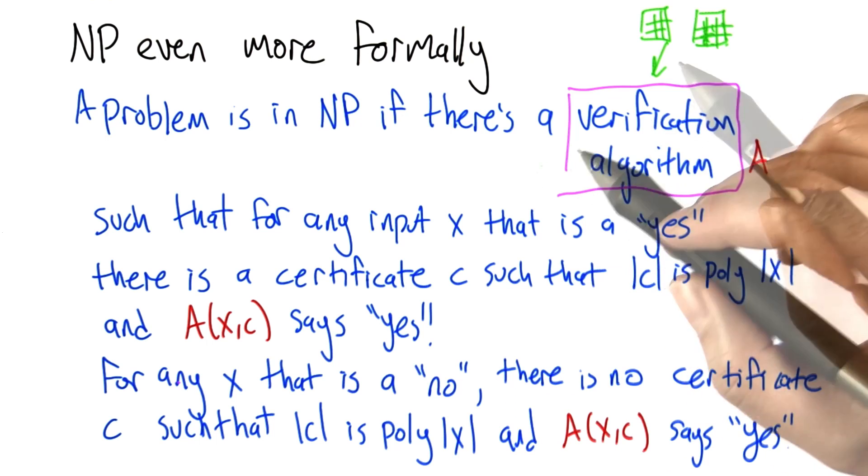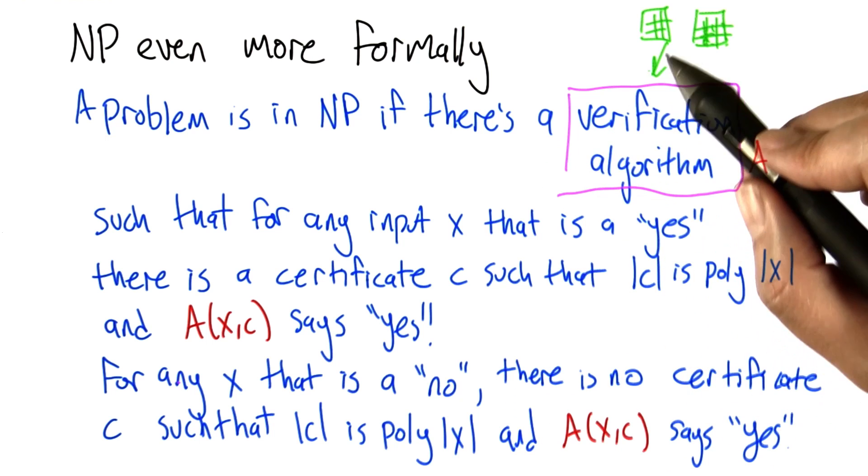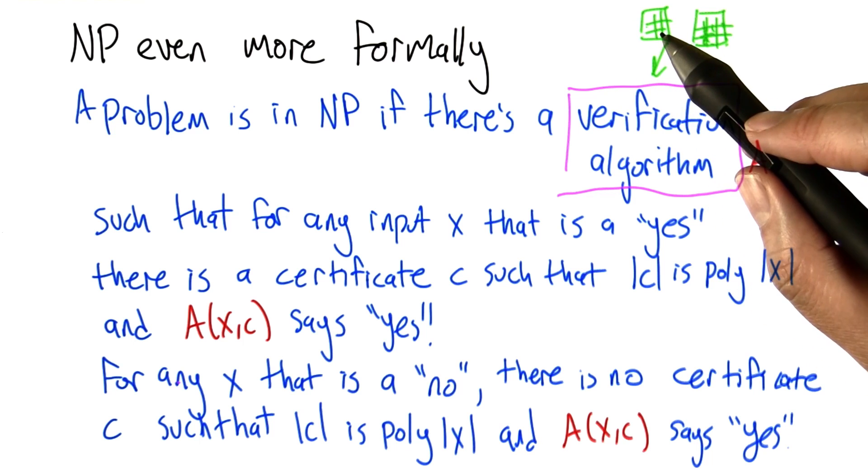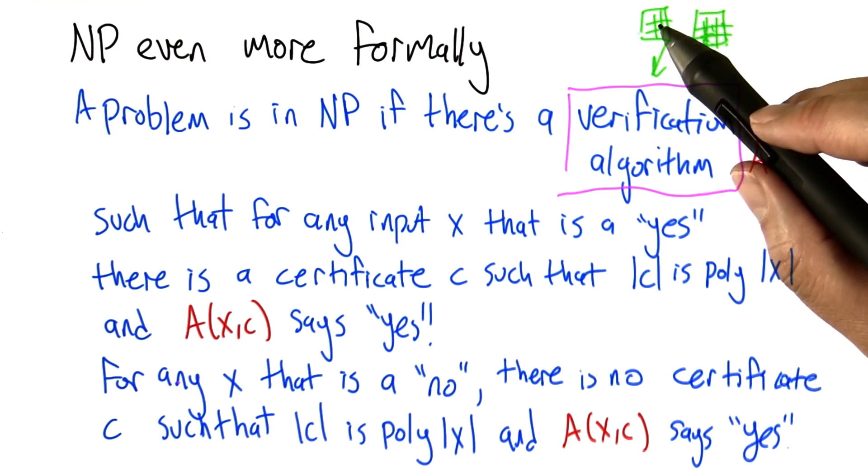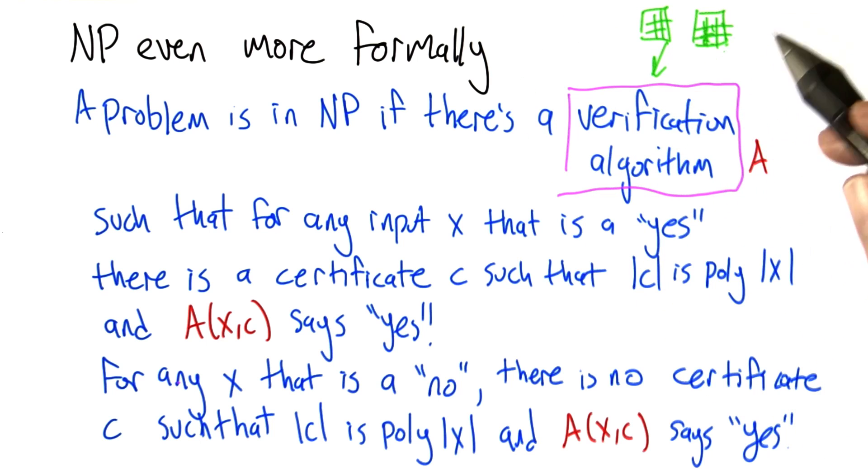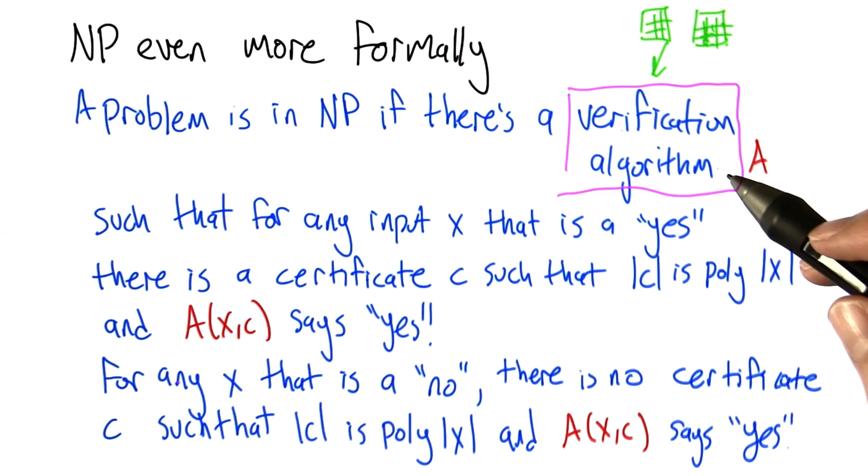So this problem is in NP. Now, let's be a little careful here because Sudoku, as it's typically designed, doesn't really have an input size. All the inputs are of the same size. But you can imagine a generalization of Sudoku where you have a bigger grid and maybe more symbols and the same kind of verification procedure works.